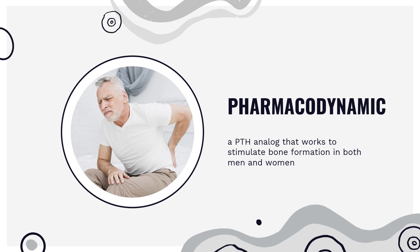Like endogenous PTH, teriparatide affects calcium and phosphate homeostasis. It causes a transient increase in serum calcium levels and increases urinary calcium excretion. In clinical trials, it also produced transient phosphaturia and mild reductions in serum phosphorus concentration.